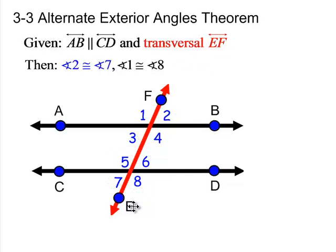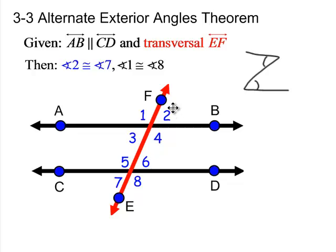And alternate exterior angles — the easiest way to look at this is to recognize the letter Z. There's our letter Z, and you have your alternate interior angles. Once you identify them, just look outside of them following the vertical angle. Angle 2 is going to be congruent to angle 7, and likewise angle 1 will be congruent to angle 8.